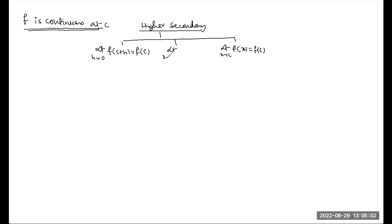The condition is: limit as x tends to c from the right of f(x) equals limit as x tends to c from the left of f(x), and both equal f(c).